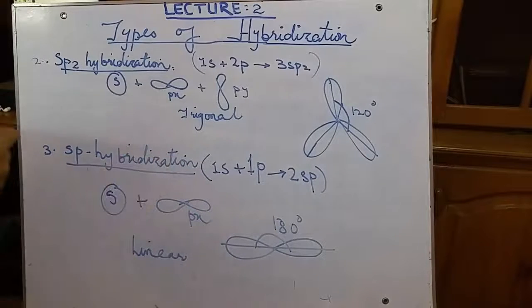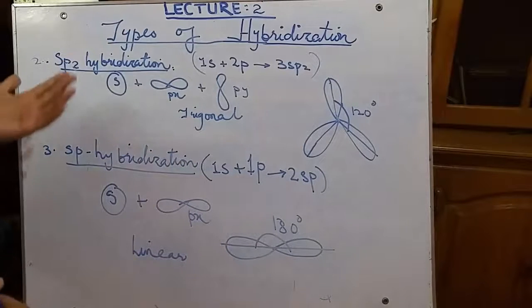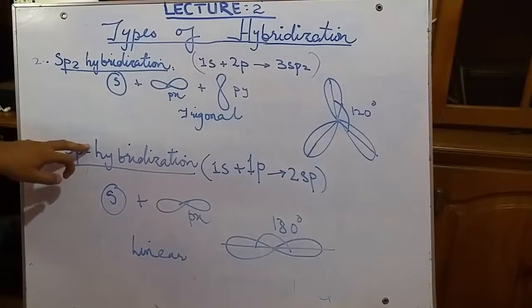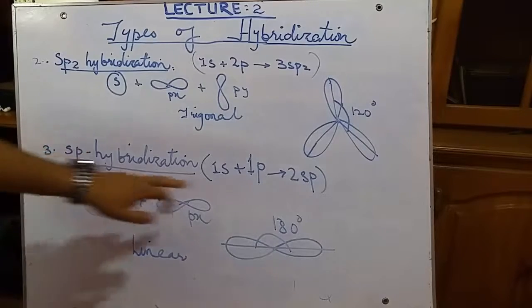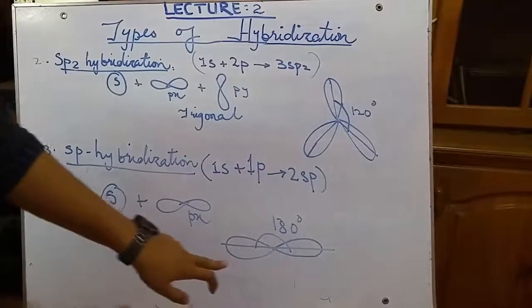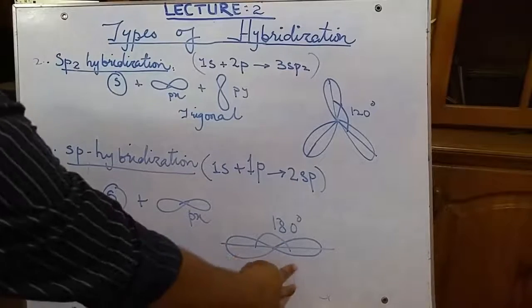Moving towards the sp hybridization. In sp hybridization, one s and one p combined to form two sp hybrid orbitals.